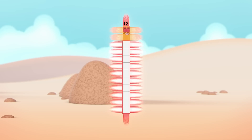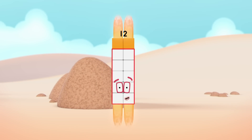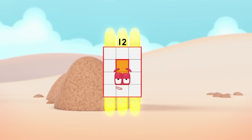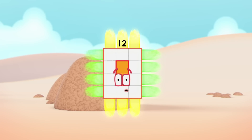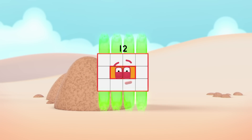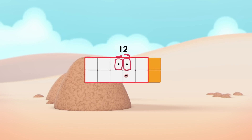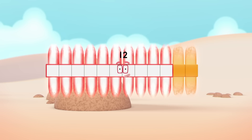One by twelve! Switch! Two by six! Switch! Three by four! Turn! Four by three! Switch! Six by two! Switch! Twelve by one! Break away!